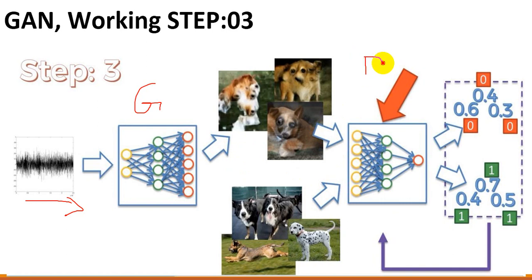The discriminator, which means the convolutional neural network, outputs some probabilities. In those probabilities there is a joint probability concept. At last, we apply the cumulative sum and backpropagation, and so we get our trained discriminator.